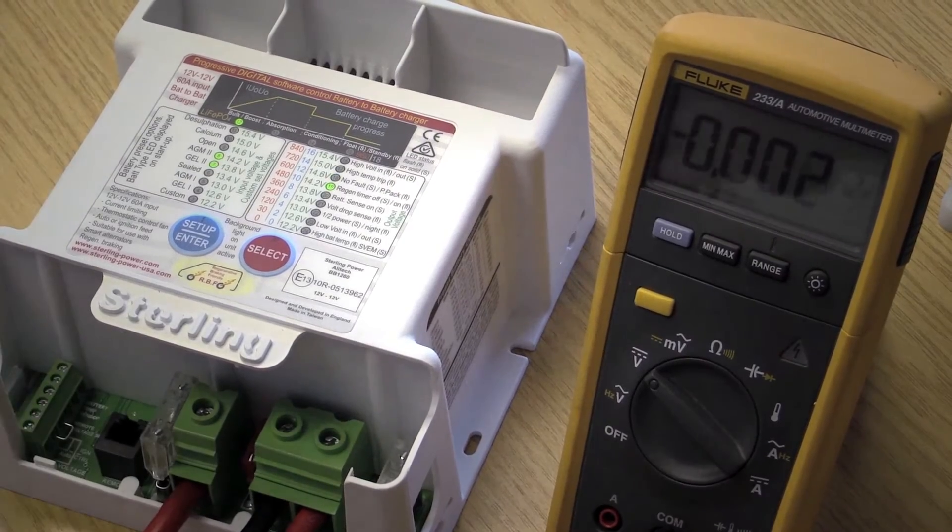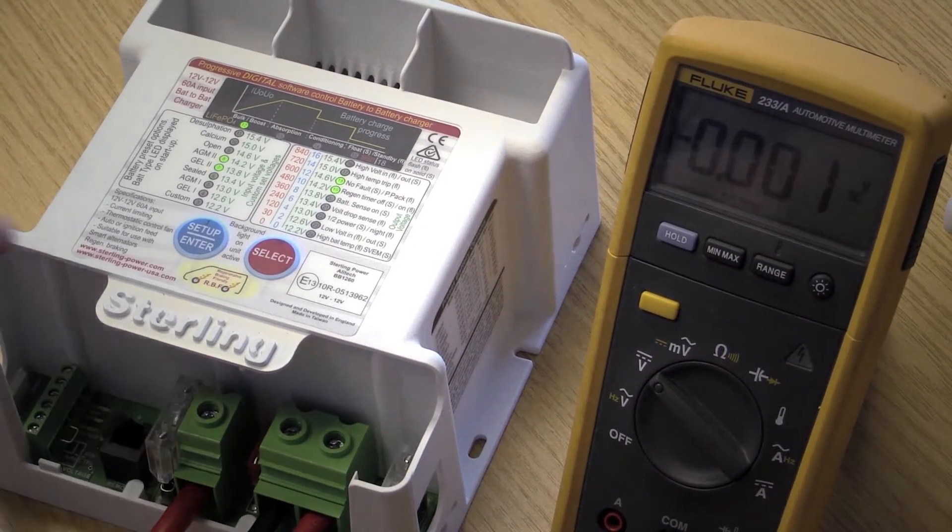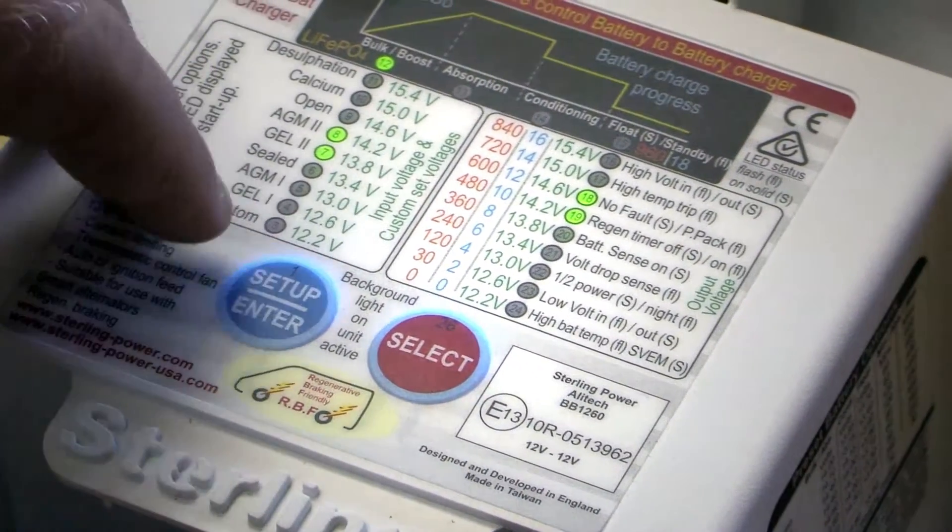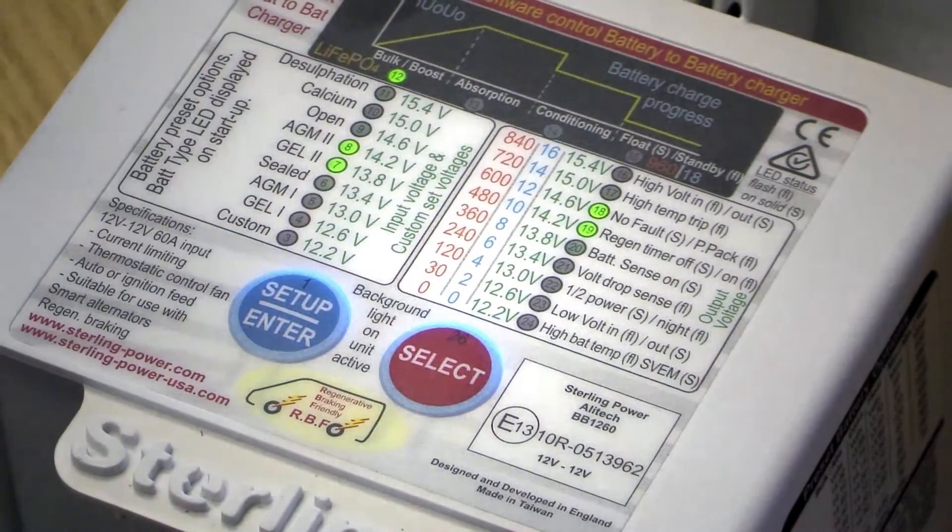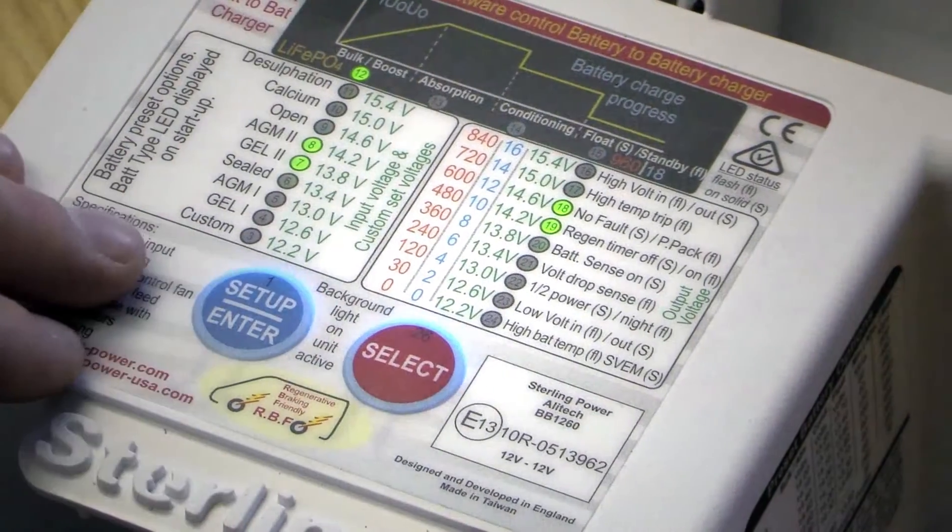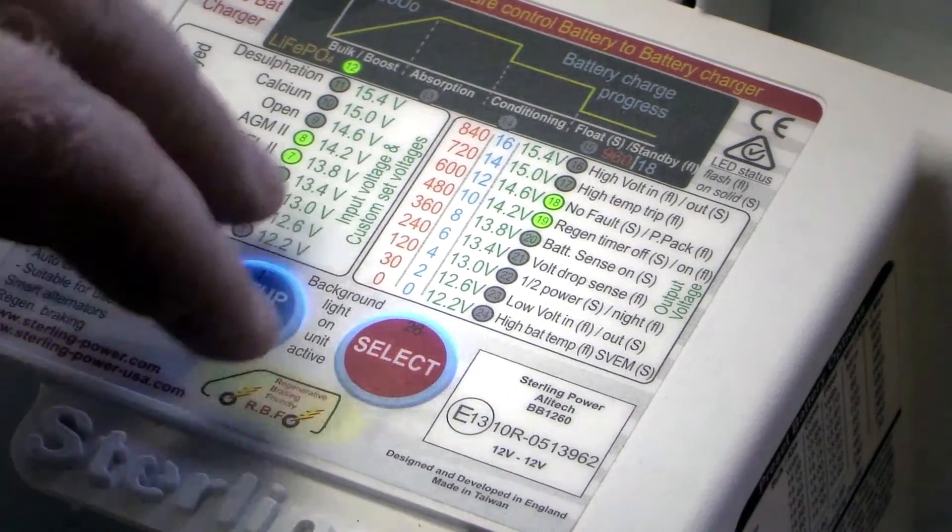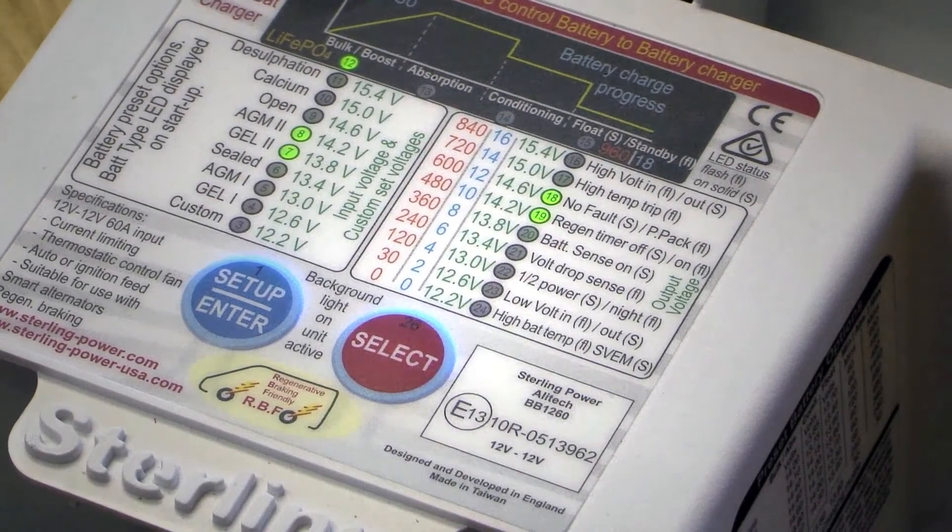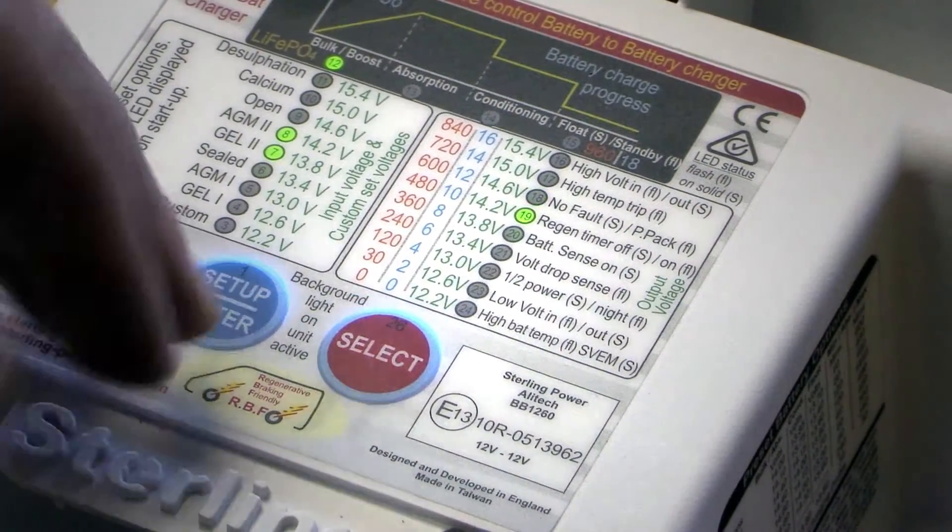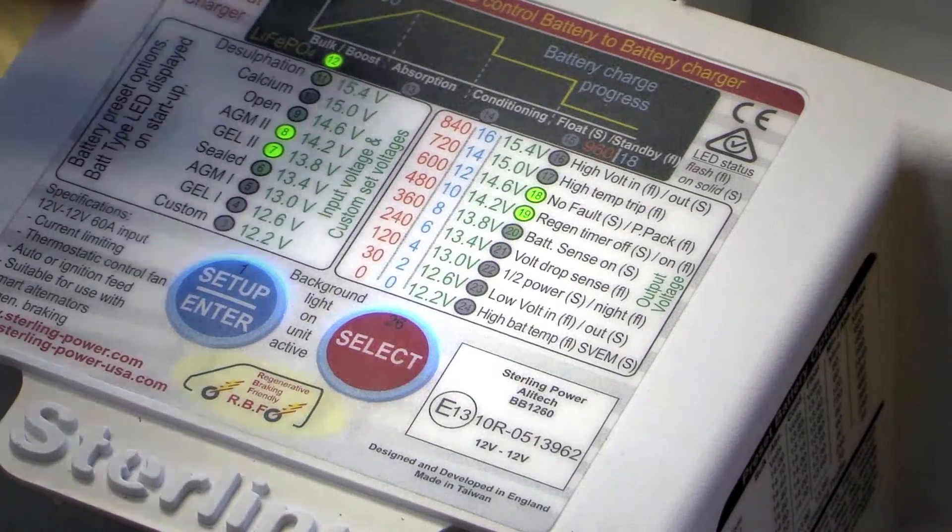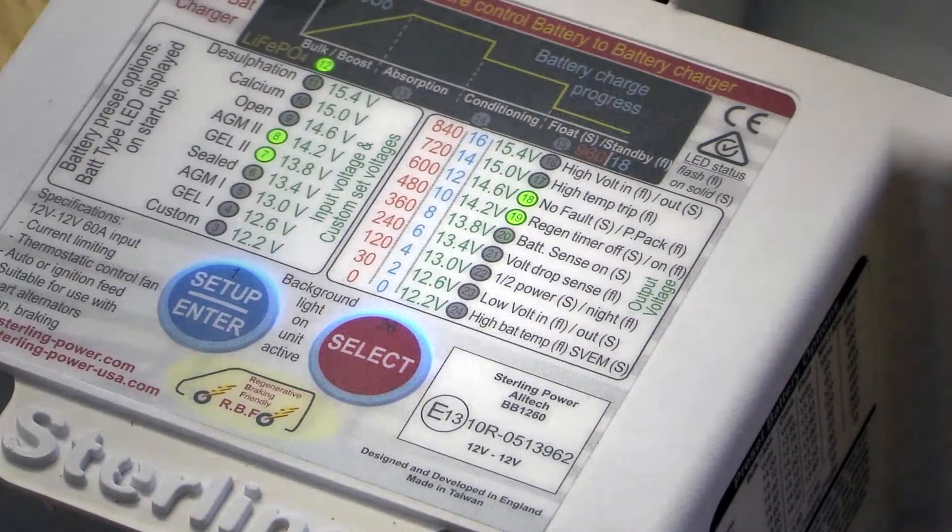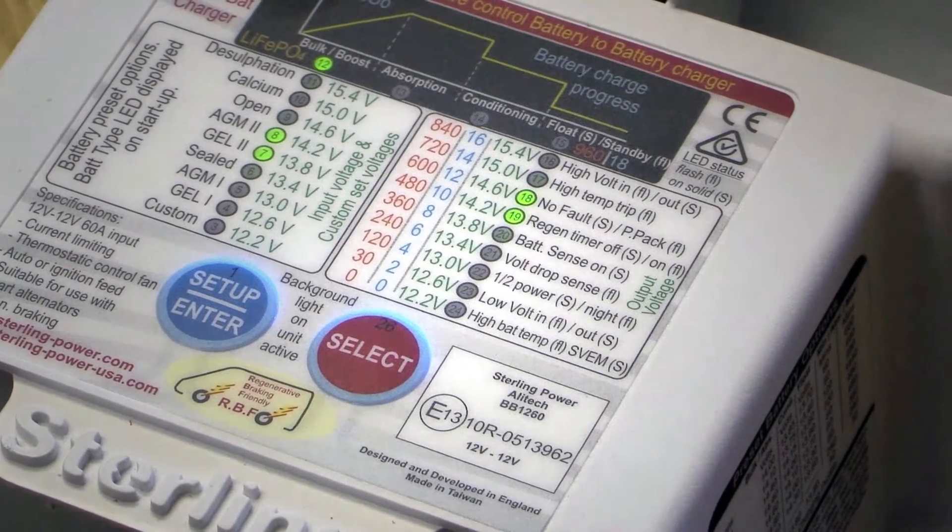Now to get it out of half power mode, you simply hold this setup, enter button down for two seconds. And then after those two seconds, simply let it go and then measure what current is flowing through it. You'll find that the amount of current flowing through the unit has now doubled. So holding this button down by two seconds will force the unit into half power mode. And then simply pushing those two buttons again for two seconds, letting go, will take it out of half power mode.